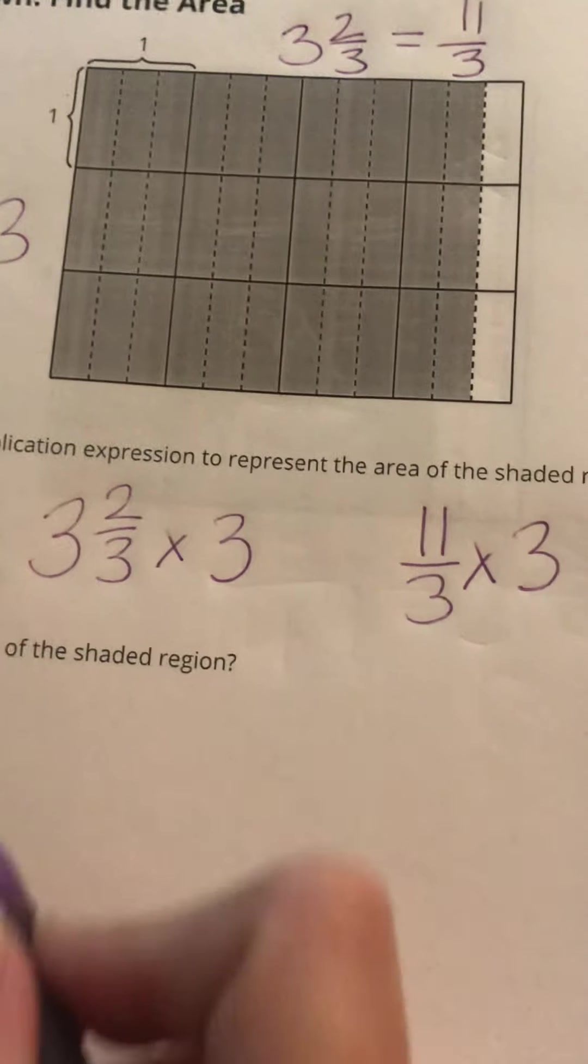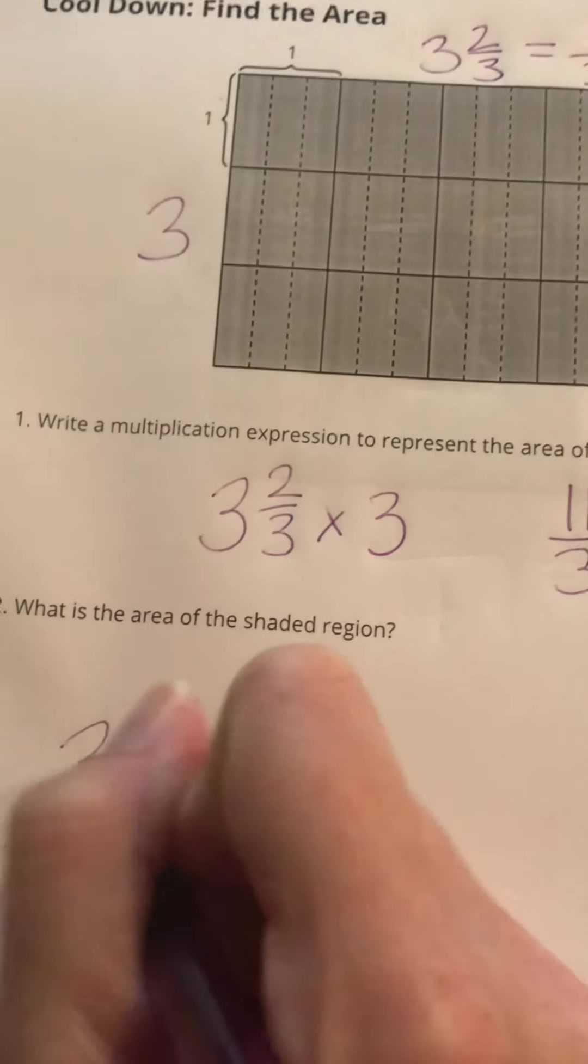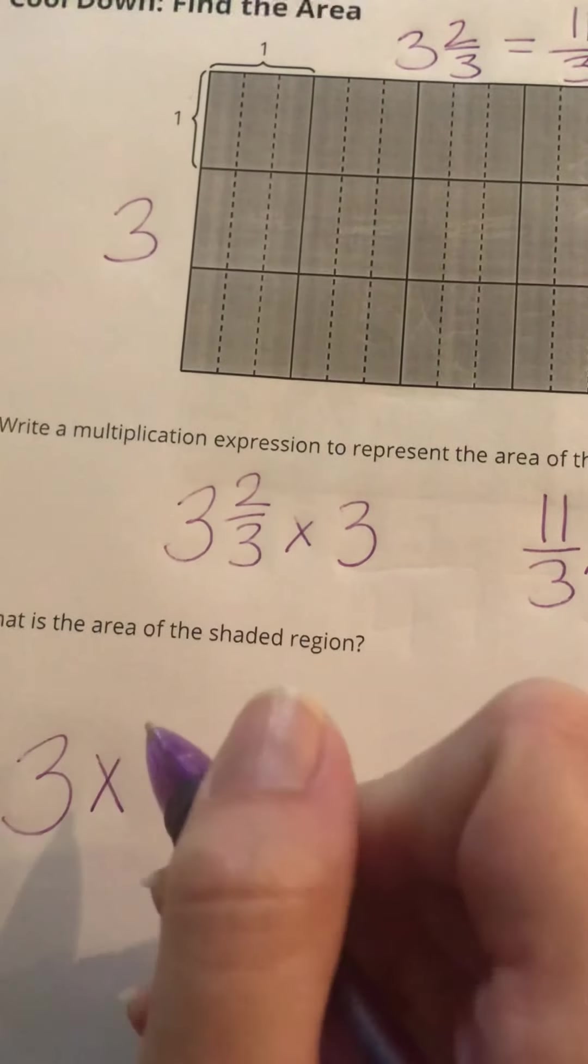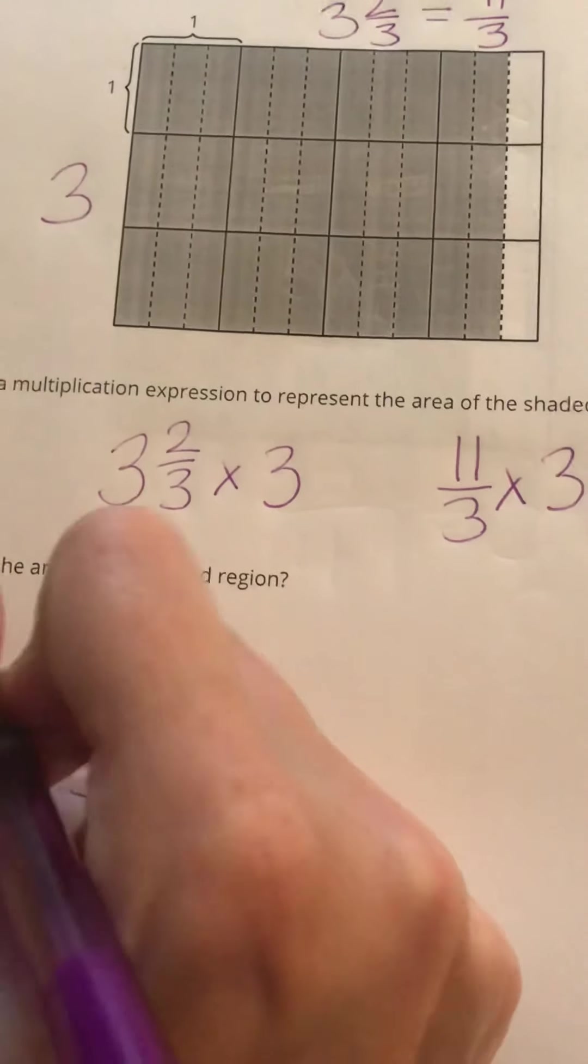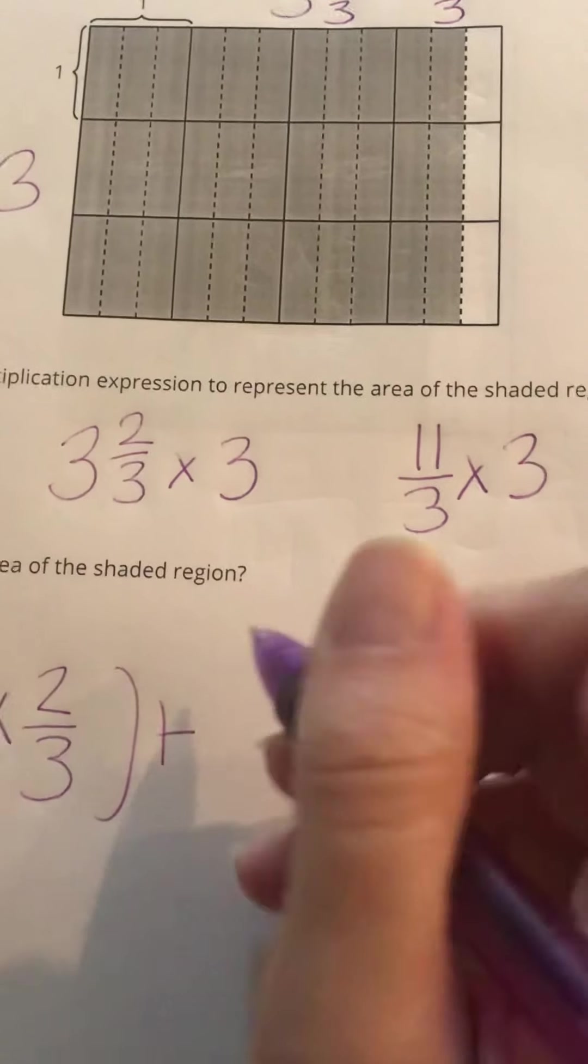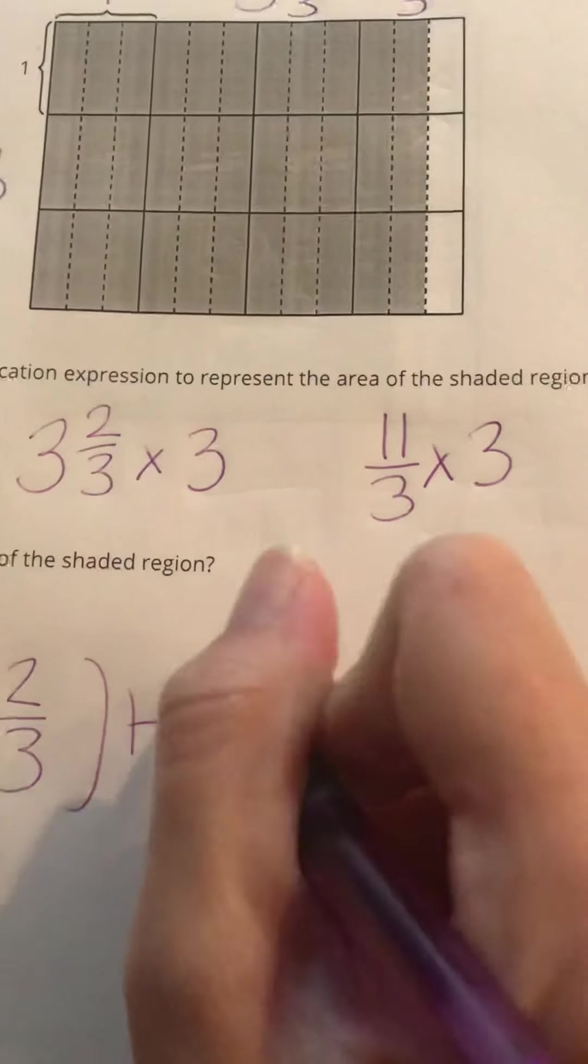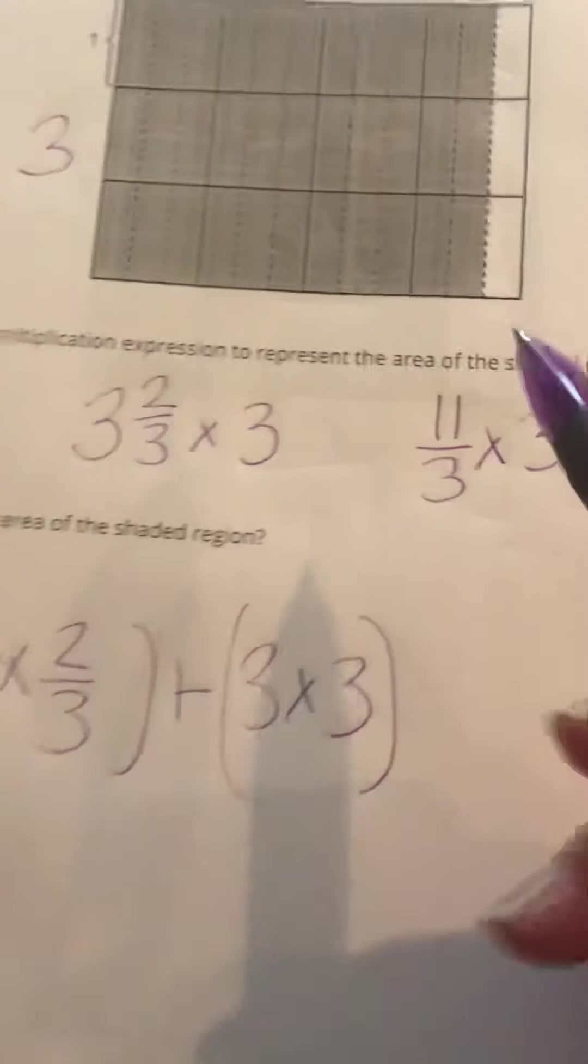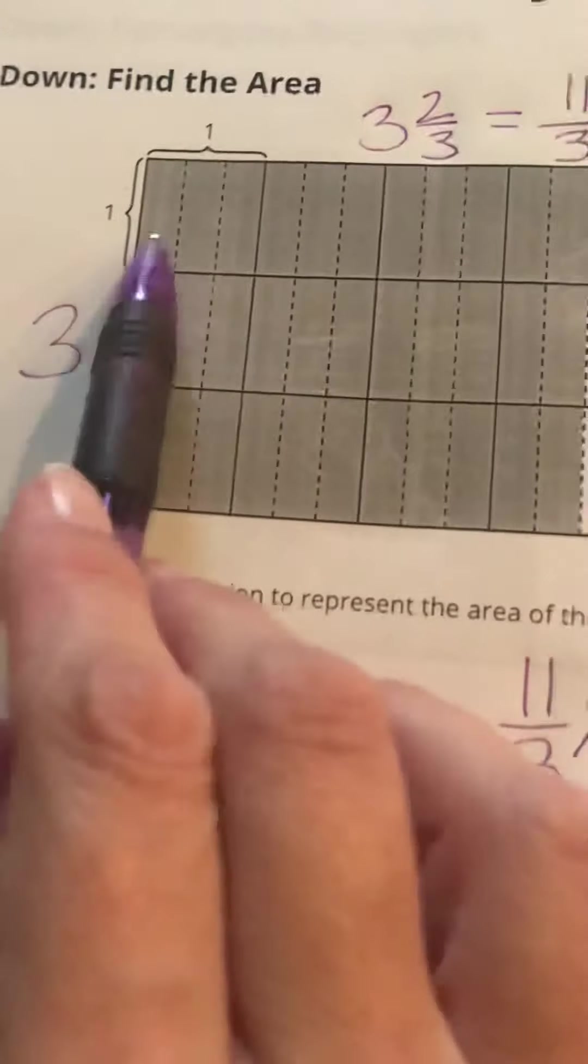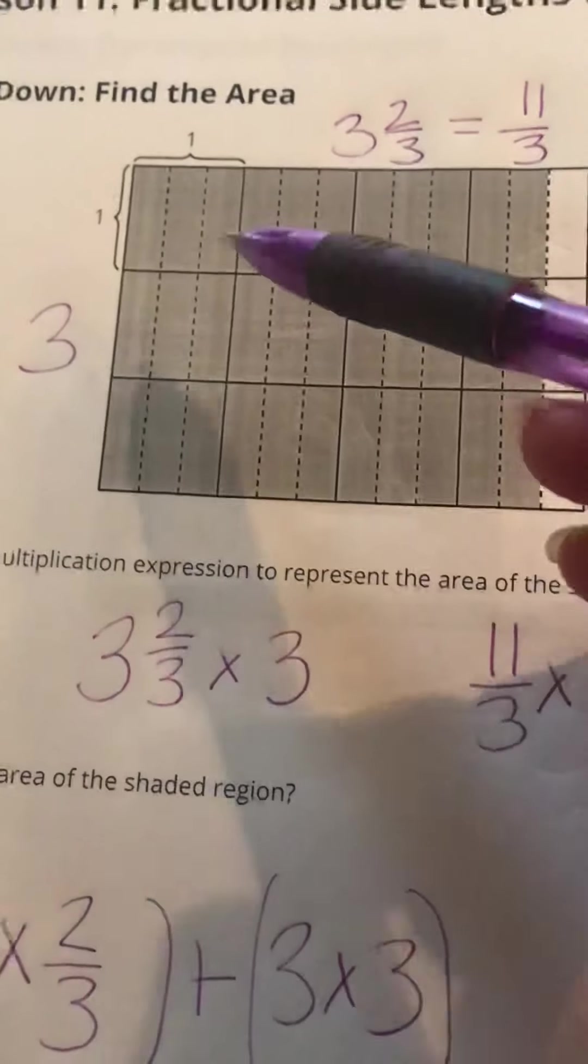So a way that I could write that would be 3 times 2/3 and then plus 3 times 3. And I could get that from the picture too, because if I have these 3 here and then 3 here, I would be multiplying 3 times 3, and then here I'm multiplying 3 times the 2/3.